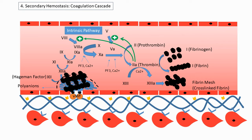This pathway just described is called the intrinsic pathway of the coagulation cascade. It is normally seen in trauma to the inside of the blood vessel — so basically, any internal cause of bleeding is associated with the intrinsic pathway.